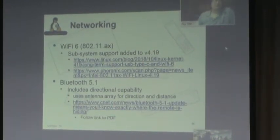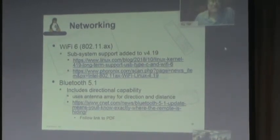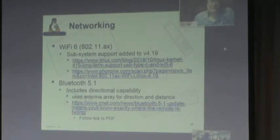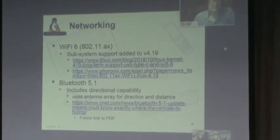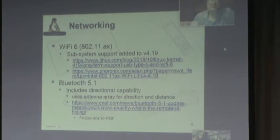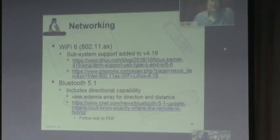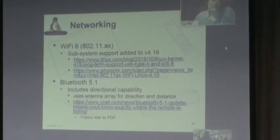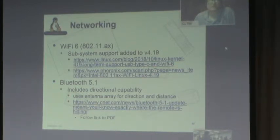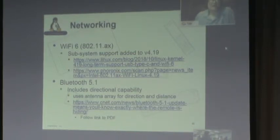In terms of networking: Wi-Fi 6 is on the horizon, and Linux is ready for it. Subsystem support for Wi-Fi 6 — the IEEE name is 802.11ax — has already been added to version 4.19 of the kernel, so 5.0 and 5.1 already have the support. We don't see a whole lot of drivers yet because the hardware hasn't really made it out to consumers, but the networking stack is already supported in the Linux kernel.